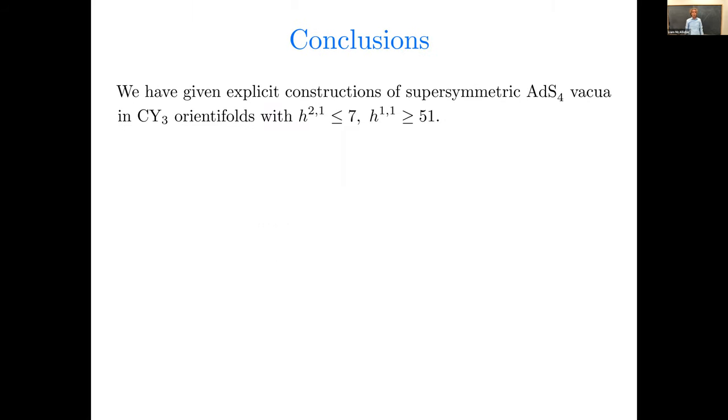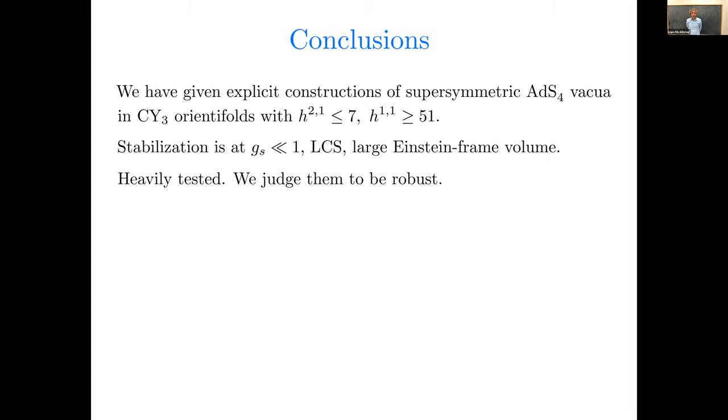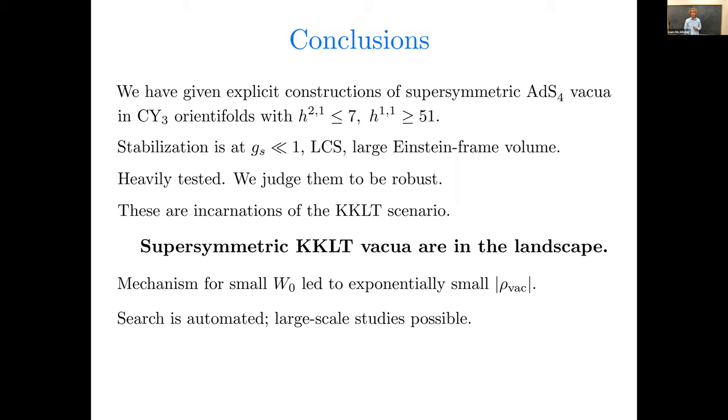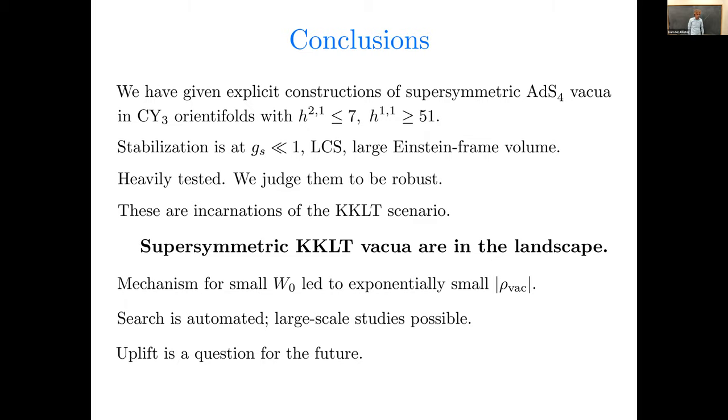Okay, so now let me conclude. We've given explicit constructions of supersymmetric ADS4 vacua in Calabi-Yau threefold orientifolds with H21 up to seven and H11 at least 51. The stabilization is at weak string coupling, large complex structure, large Einstein frame volume. We've tested these things rather intensively, and we judge them to be robust. These are incarnations of the KKLT scenario, and so we have found that supersymmetric KKLT vacua are in the landscape. The mechanism that we used for small w naught led to exponentially small magnitude of the vacuum energy, and because the search is automated, large-scale studies are possible. But what we've left for the future is the question of an uplift to de Sitter space. Thanks very much for your attention. Thank you. Thank you.